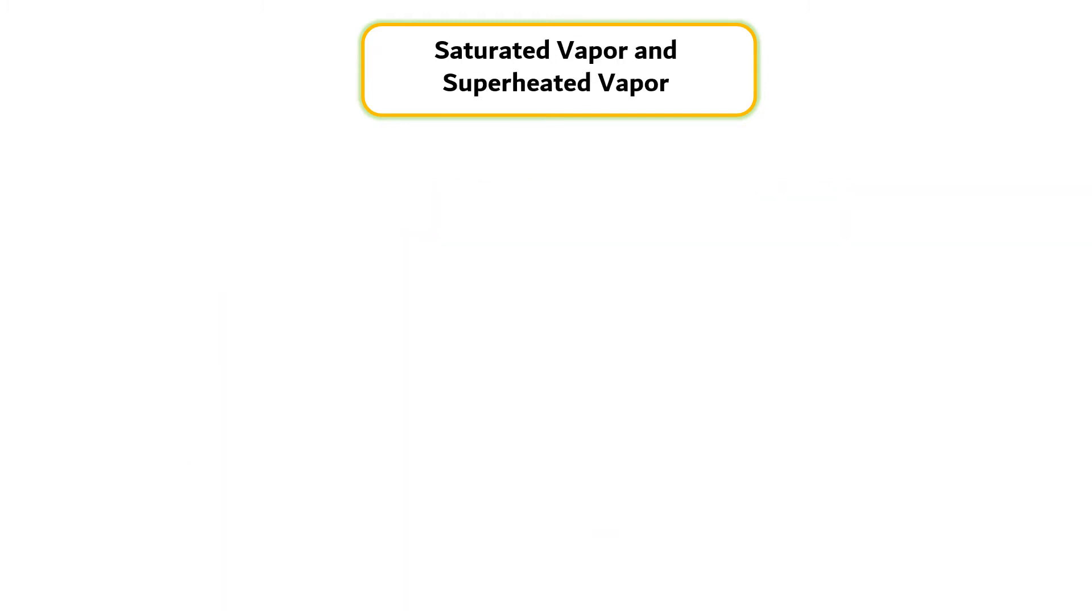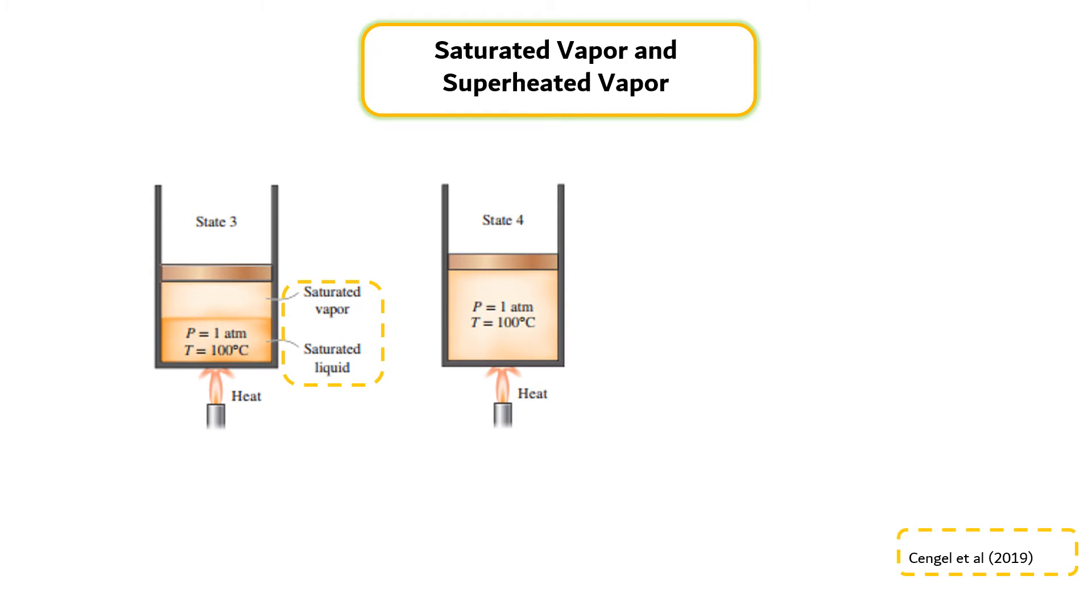Saturated vapor and superheated vapor. Midway about the vaporization line as shown in the left figure, the cylinder contains equal amounts of liquid and vapor. As we continue transferring heat, the vaporization process continues until the last drop of liquid is vaporized as shown in the middle figure. At this point, the entire cylinder is filled with vapor that is on the borderline of the liquid phase. Any heat loss from this vapor will cause some of the vapor to condense. A vapor that is about to condense is called a saturated vapor. Therefore, state 4 is a saturated vapor state.